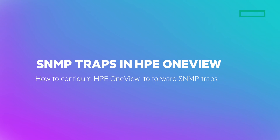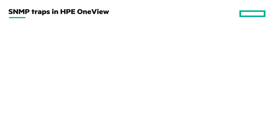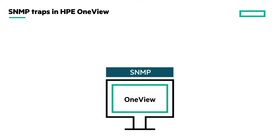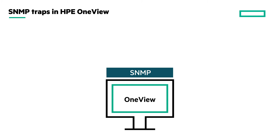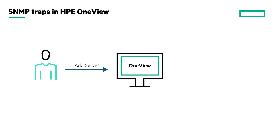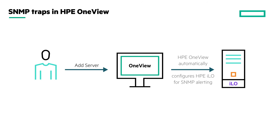In this video, let us see how SNMP traps are handled in HPE OneView and how to configure HPE OneView to forward the SNMP traps. HPE OneView uses SNMP to receive server health alerts, critical events and failures. SNMP is enabled by default on HPE OneView. When you use HPE OneView to manage a server, it adds itself as a trap destination on HPE iLO.